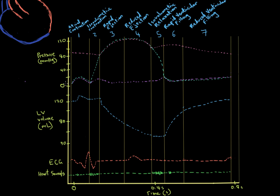On the y-axis, we have pressure in this part, from 0 to 120 millimeters of mercury, which is typically how we measure blood pressure. Then in this part of the y-axis we have left ventricular volume in milliliters. We also look at an ECG — a trace of the electrical activity of the heart muscle — and at the bottom, heart sounds. Across the top we have the seven phases of the cardiac cycle.